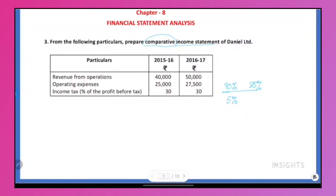In the particulars, we have revenue from operations, operating expenses, and income tax. We can calculate the profit and loss and the percentage of income tax. Income minus expense equals profit. So what is the profit? Profit after tax — that's the final answer. Let's see how to do the sum.